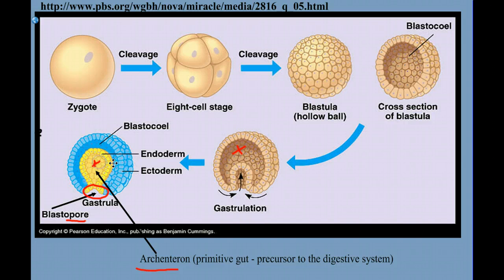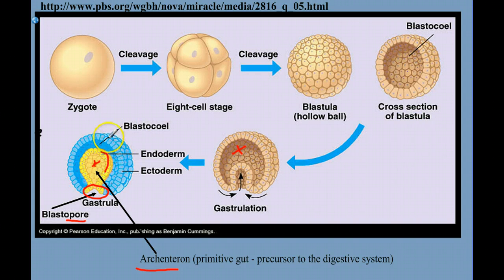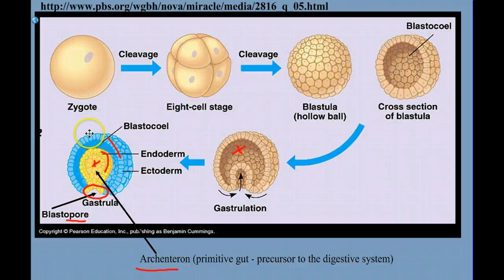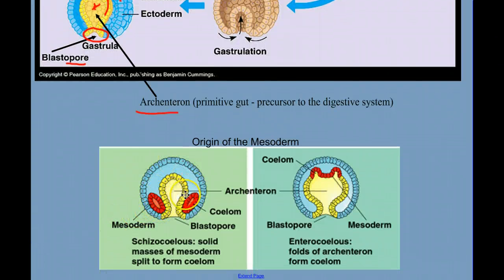What gastrulation creates for us is two distinct germ layers. We have an inner layer of cells called the endoderm, and an outer layer of cells called the ectoderm. The endoderm will eventually give rise to the organs of the digestive system — this is the primitive gut. The ectoderm will eventually give rise to the outer layer of tissue, the skin, and also the nervous system. In some animals, a third layer of tissue develops called the mesoderm — meso meaning 'middle' — which will give rise to tissues and organs such as muscle, skeletal, and reproductive systems.